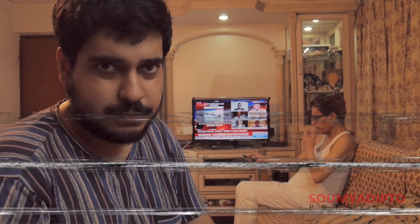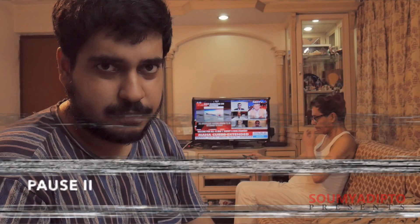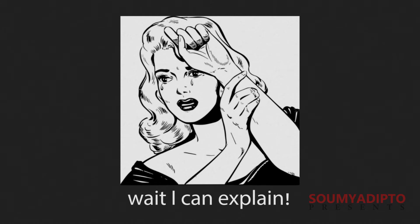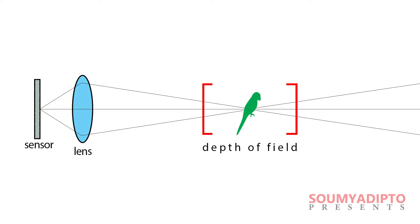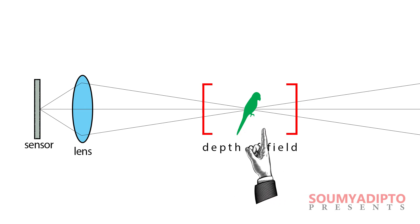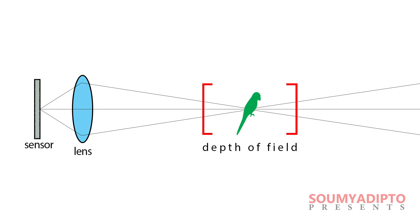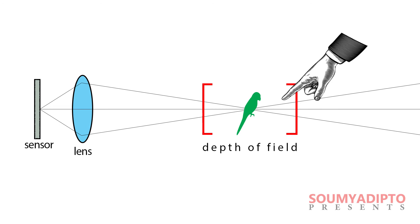Just a few things before I end this video. First, remember I said that objects in the foreground, middle ground, and background are in clear, crisp focus in a deep focus shot? Well, that's not entirely true. This is because of the very definition of depth of field, which is the region on both sides of the focal plane in front of the camera where objects are acceptably in focus. That word 'acceptably' is key — what it means is that although the light rays from the objects never really converge to an actual point, the rays are close enough to give us the impression that the objects are in focus.